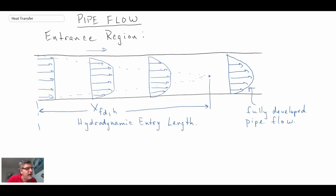So that is the entrance region. Over here we have uniform inlet flow, and then once we get through the hydrodynamic entry length we have what we call fully developed pipe flow.